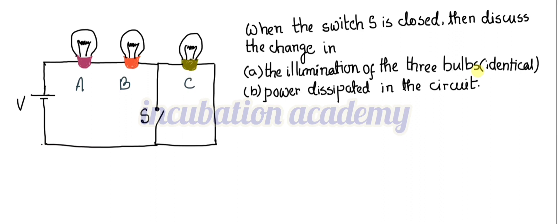First, we look at the initial state — when the switch is not closed. When the switch is open, we replace all three valves with identical resistors of value R. This R represents bulb A, another R represents bulb B, and another R represents bulb C. These three resistors are in series, and the voltage V is connected directly to this circuit.